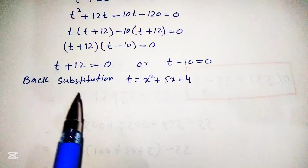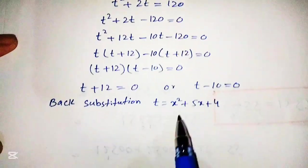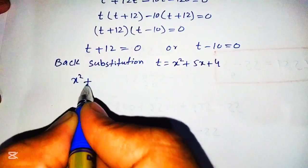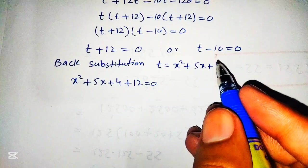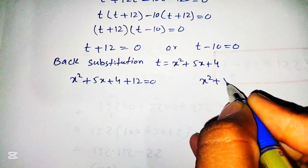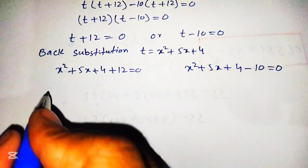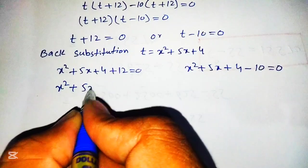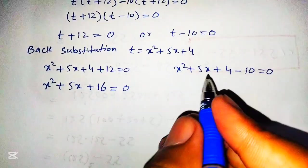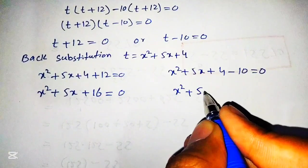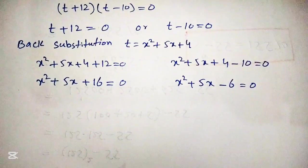Now putting back the value of t, which is x² plus 5x plus 4, into these two equations. From t plus 12 equals 0, we get x² plus 5x plus 4 plus 12 equals 0, which simplifies to x² plus 5x plus 16 equals 0. From t minus 10 equals 0, we get x² plus 5x plus 4 minus 10 equals 0, which simplifies to x² plus 5x minus 6 equals 0.